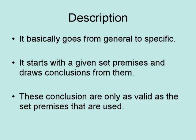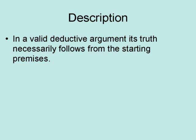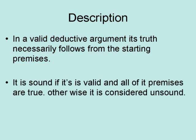The conclusions are only as valid as the set of premises that are used, and it only takes one false premise to produce a false conclusion. In a valid deductive argument, its truth necessarily follows from the starting premises. It is considered sound if it is valid and all of its premises are true. Otherwise, it is considered unsound.